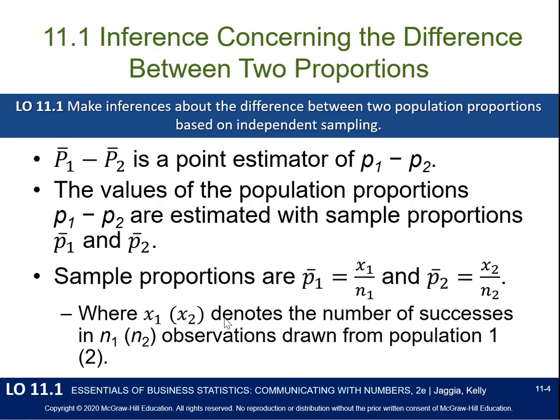If we have qualitative data we're looking at the proportion, which we denote with a P. If we have samples from two different populations, our sample proportion for population 1 would be x1 — the number of successes in sample 1 — divided by n1. P2 is the number of successes in population 2 divided by the sample size of population 2.